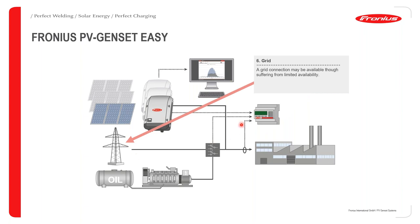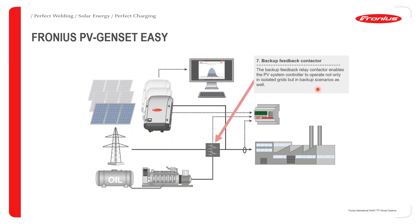In a grid backup scenario, the grid may be available but suffering from limited availability. The ATS — automatic transfer switch — is critical in this scenario. It uses a feedback contact relay to tell the PV system controller whether the grid or the generator is currently operating, so the controller knows whether to limit PV power or to apply the generator minimum load rules.